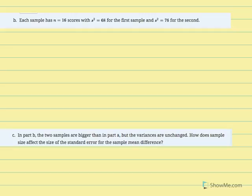Problem 11b: each sample now has 16 individuals with the same variances — 68 for the first sample and 76 for the second. We're changing sample size from 4 to 16 while keeping variances the same, and again calculating the estimated standard error of the mean difference to see the effect of increased sample size.